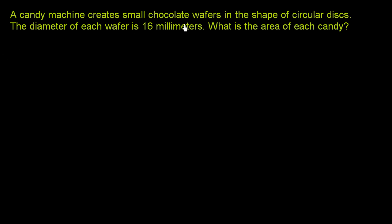A candy machine creates small chocolate wafers in the shape of circular disks. The diameter of each wafer is 16 millimeters. What is the area of each candy?